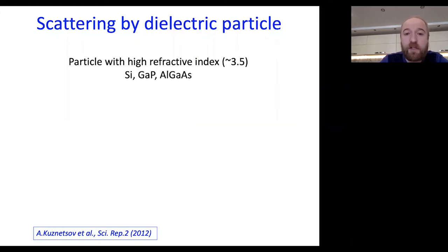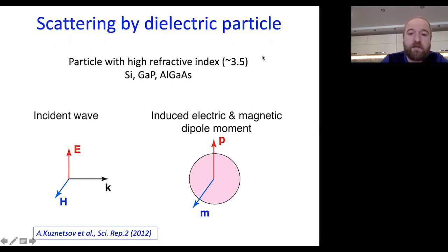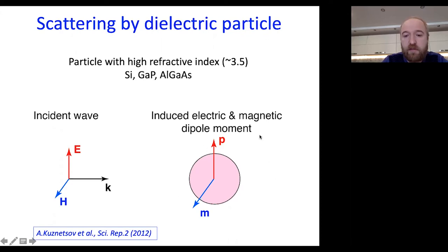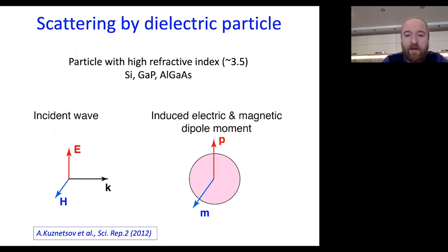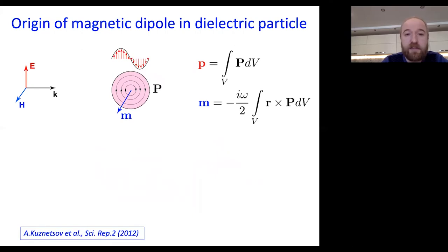These high-index dielectric particles — with refractive index around 3.5 — have the characteristic feature that an incident wave can excite not only an electric dipole moment but also a magnetic dipole moment, and they are orthogonal in the simplest case of a sphere. So this particle is characterized not only by electric response but also by magnetic response. There is no magic in having a magnetic response at optical frequencies — the incident wave polarizes the particle, and in each point we have some polarization. In order to calculate the dipole moment, we integrate the polarization over the whole volume.